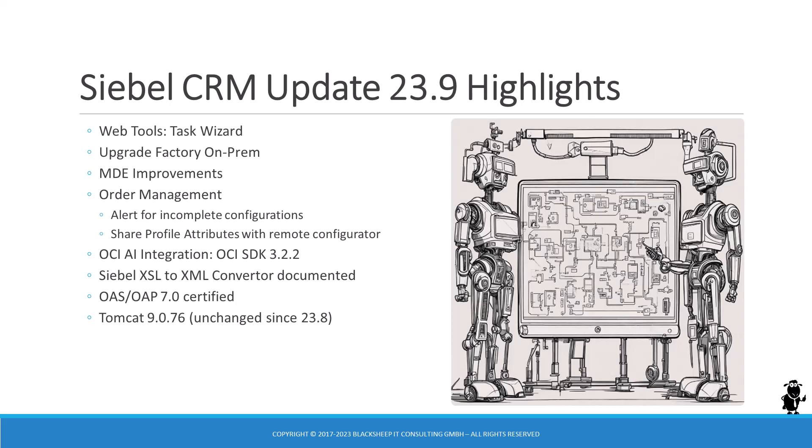Order management users will find two new features: alert for incomplete configurations and the ability to share profile attributes between remote configurator sessions and the object manager. Since 23.8, the internal Tomcat ships with an updated OCI SDK version 3.2.2, which application integrators can choose to deploy instead of the old version. The Siebel XSL to XML converter, which also converts property sets to JSON and back, is now documented.